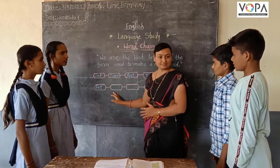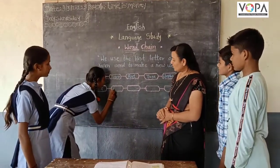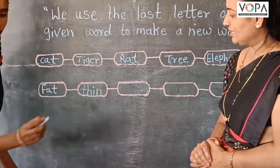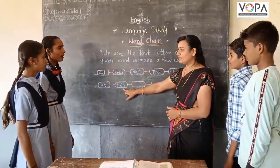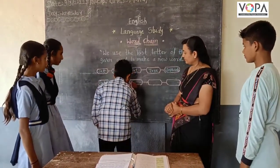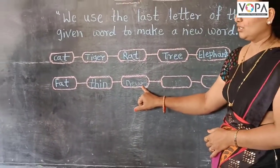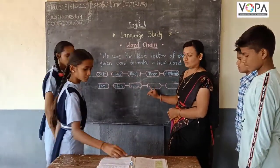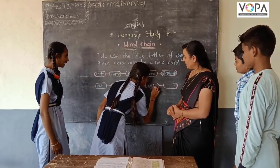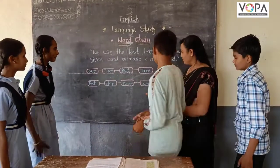Can you complete this chain? Yes. Who writes the next word? Heen. Very good — heen. Which is the last letter in this word? N. Who writes the N letter word? New. Very good — new. Which is the last letter? W. Who writes the W? W-E-A-K. Which is the last letter? K. So K for?